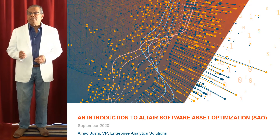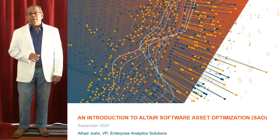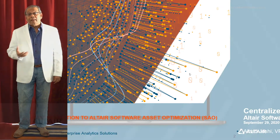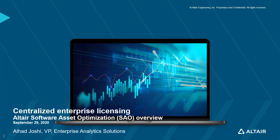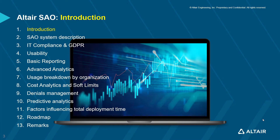SAO was first released in 2013 and now has evolved into a compelling solution. It has been adopted by over 110 global customers and continues to expand its capabilities. Altax is a license analytics solution for centralized enterprise licensing focusing on usage analytics and right-sizing software inventory. These sections indicate how SAO has evolved into a comprehensive solution in seven years after its initial release in 2013.